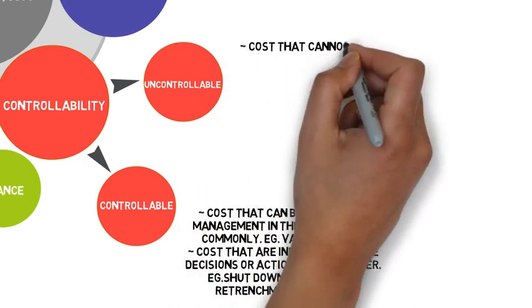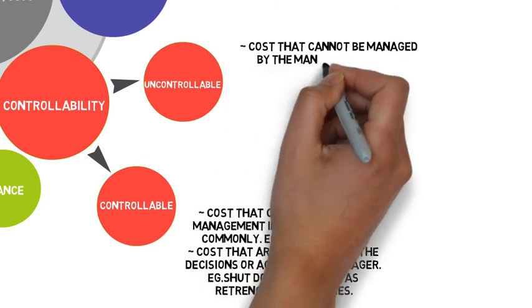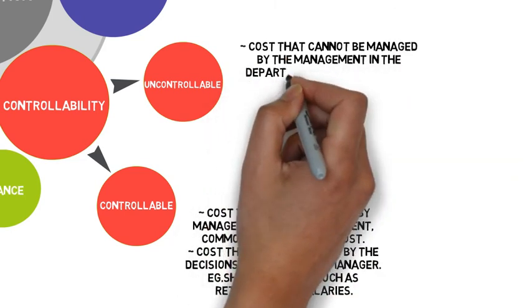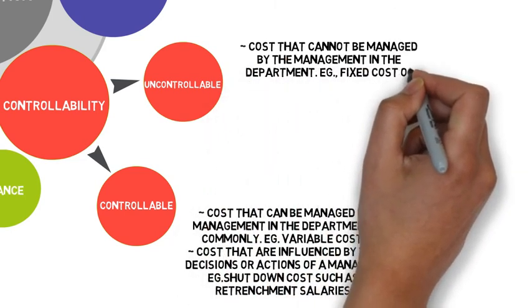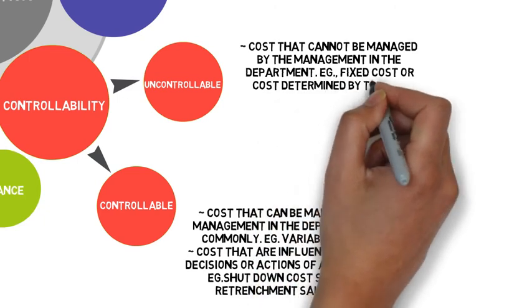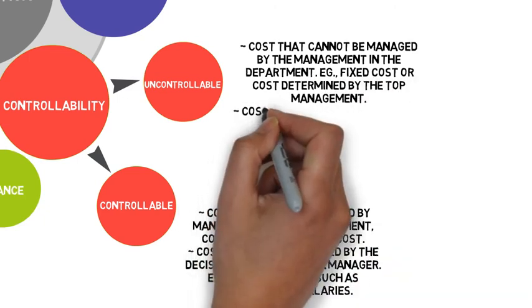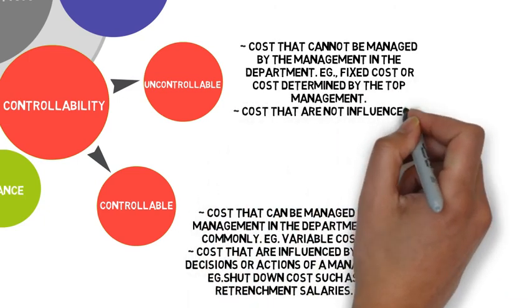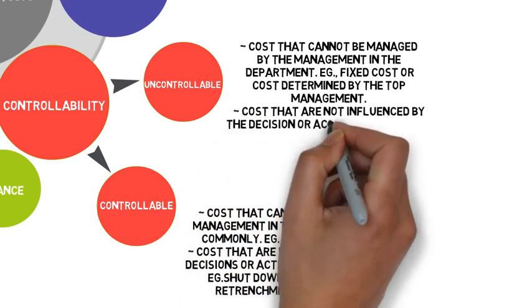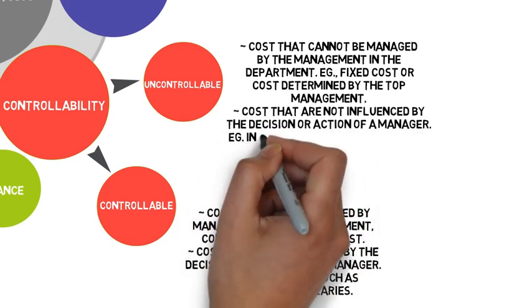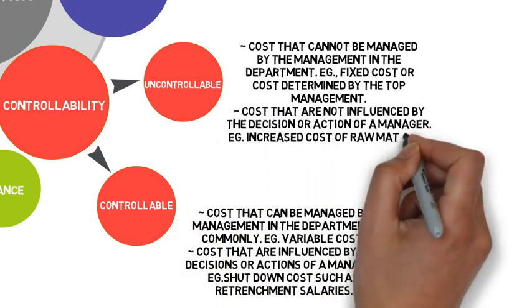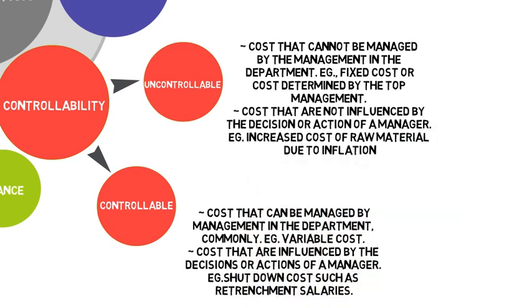Opposite of controllable is uncontrollable cost, which defined as cost that cannot be managed by the management in the department. For example, fixed cost or cost determined by the top management. Furthermore, uncontrollable also defined as cost that are not influenced by the decision or action of a manager. For example, increased cost of raw material due to inflation.